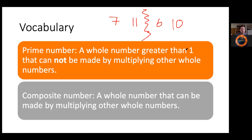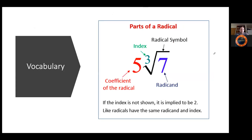With that, prime and composite numbers covered, from here we also want to know what a radical is. A radical is essentially any value that has this shape — this is called a radical symbol. Today we're focusing on square roots, but there are other forms such as cube roots. This is an example of a cube root because the index is three. The first part is the radical symbol itself.